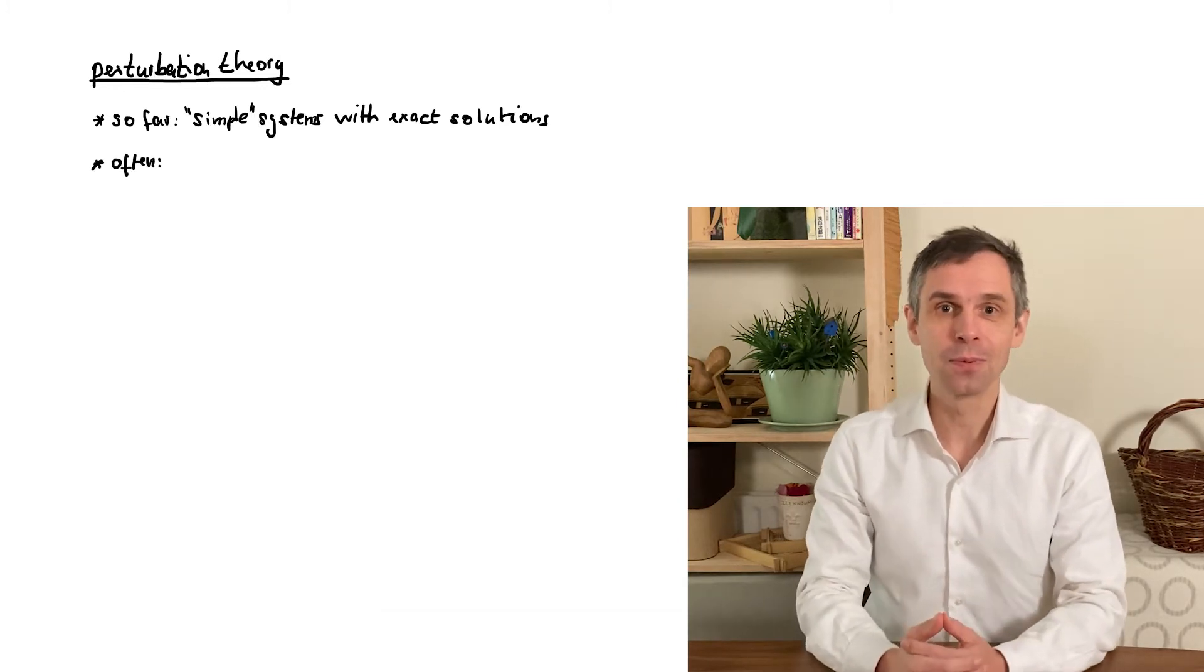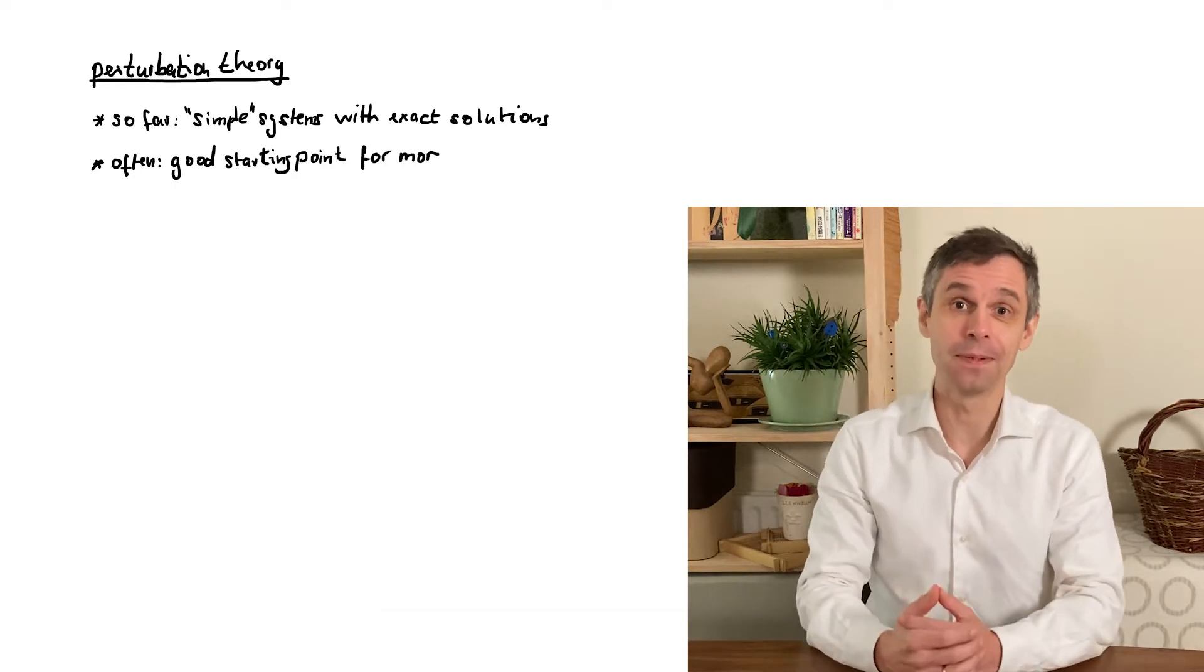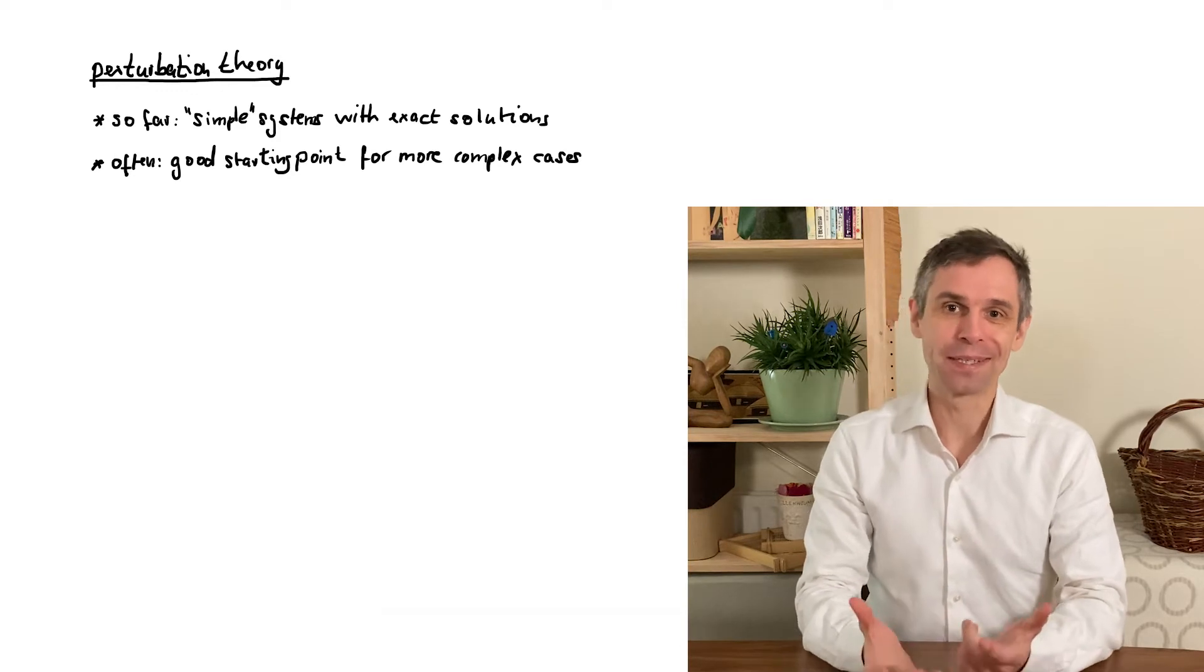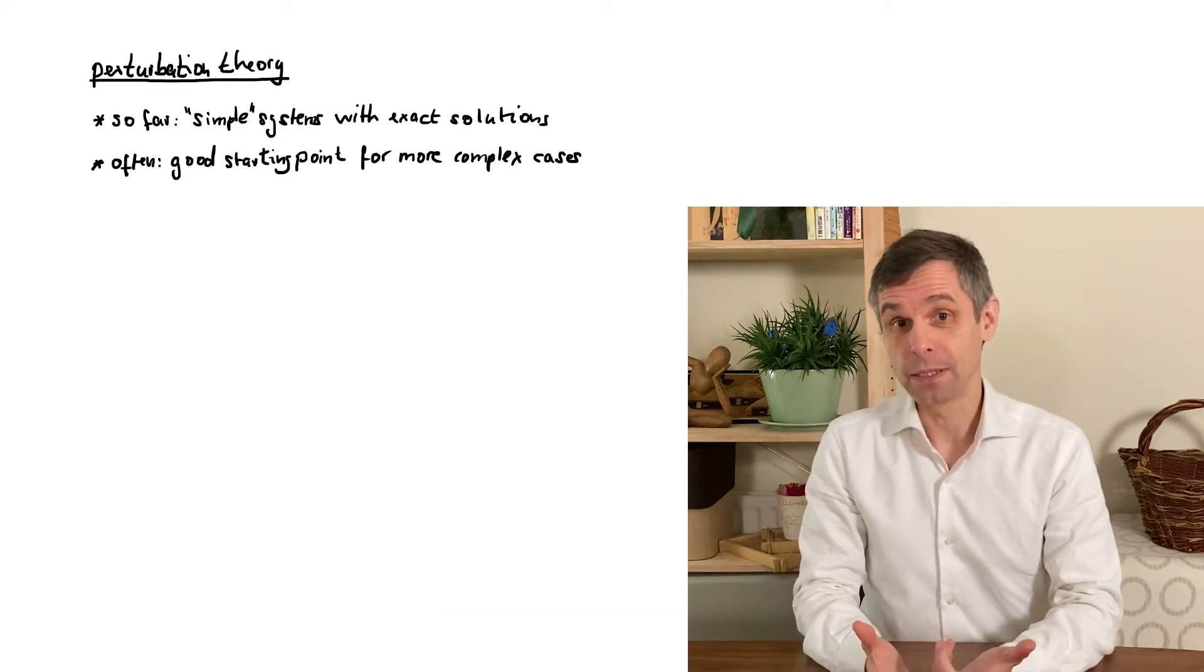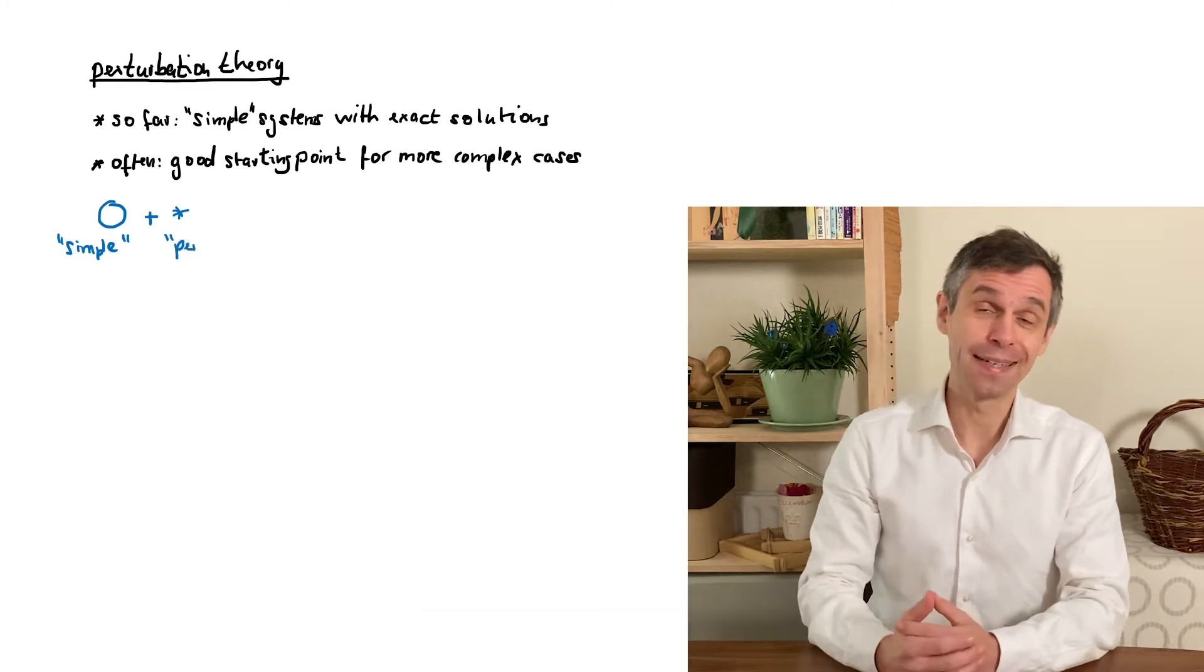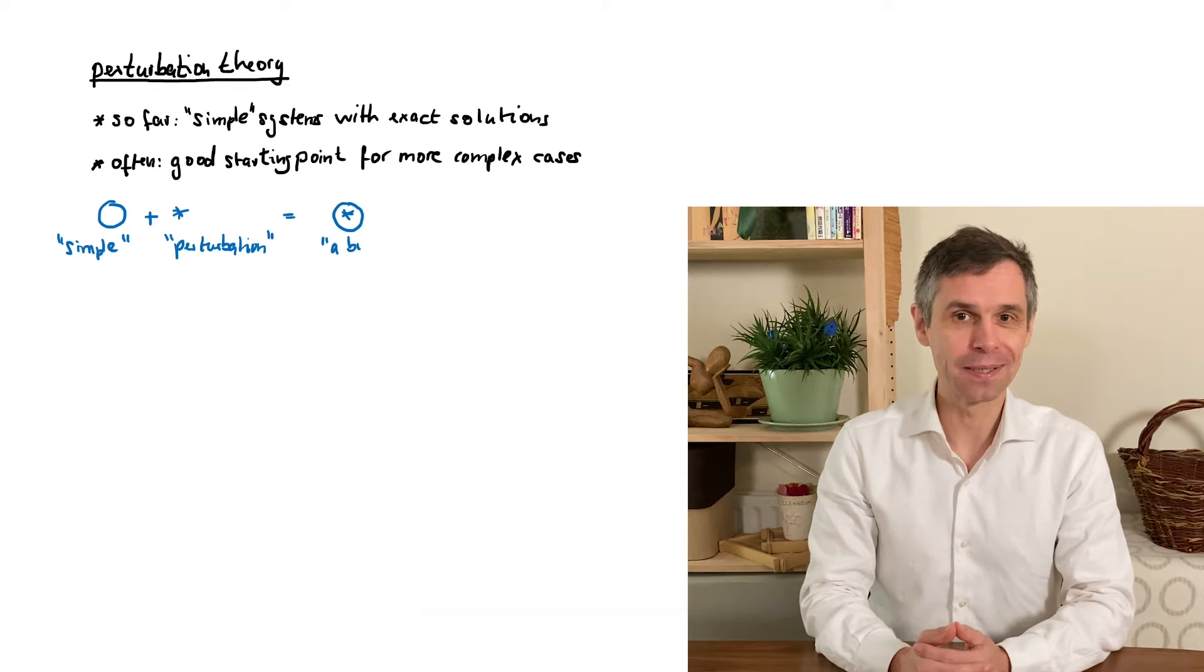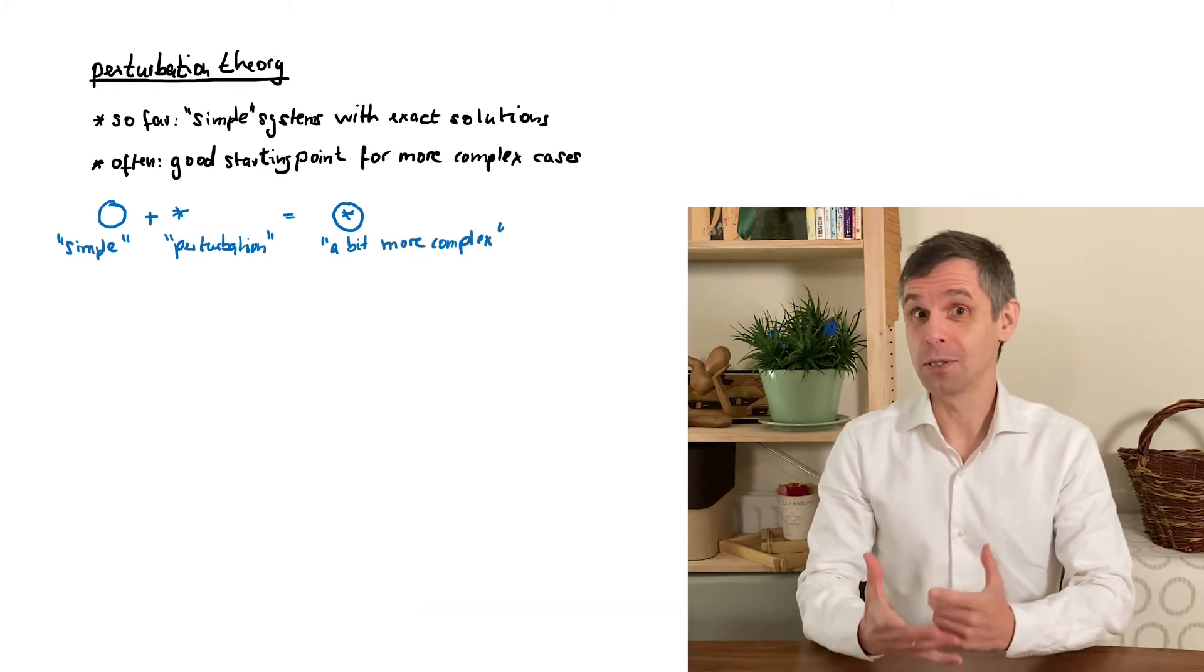So to set this scene, assume that we have a stationary quantum system that is similar to a quantum system that we understand very well but differs by some features that require a more careful analysis. In this case, the key idea of perturbation theory is to separate out the features that we understand very well and then focus on the aspects that require more careful analysis. So you have your normal quantum system that you understand very well and these additional features that are generally known as the perturbation.